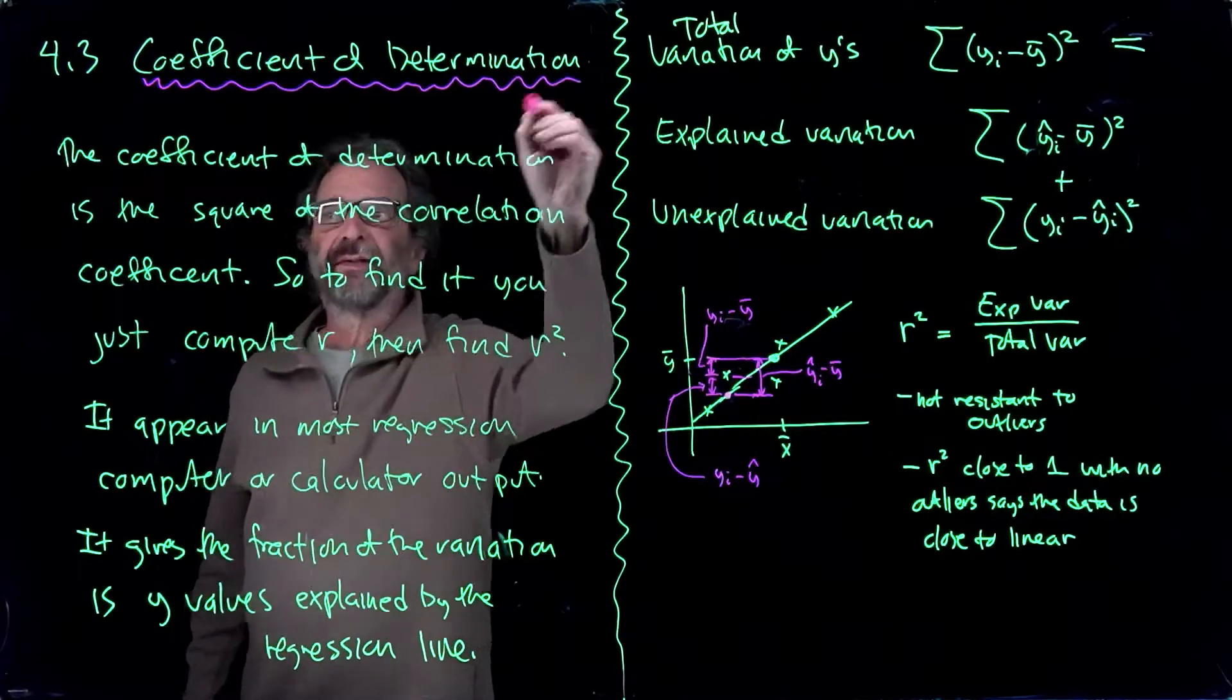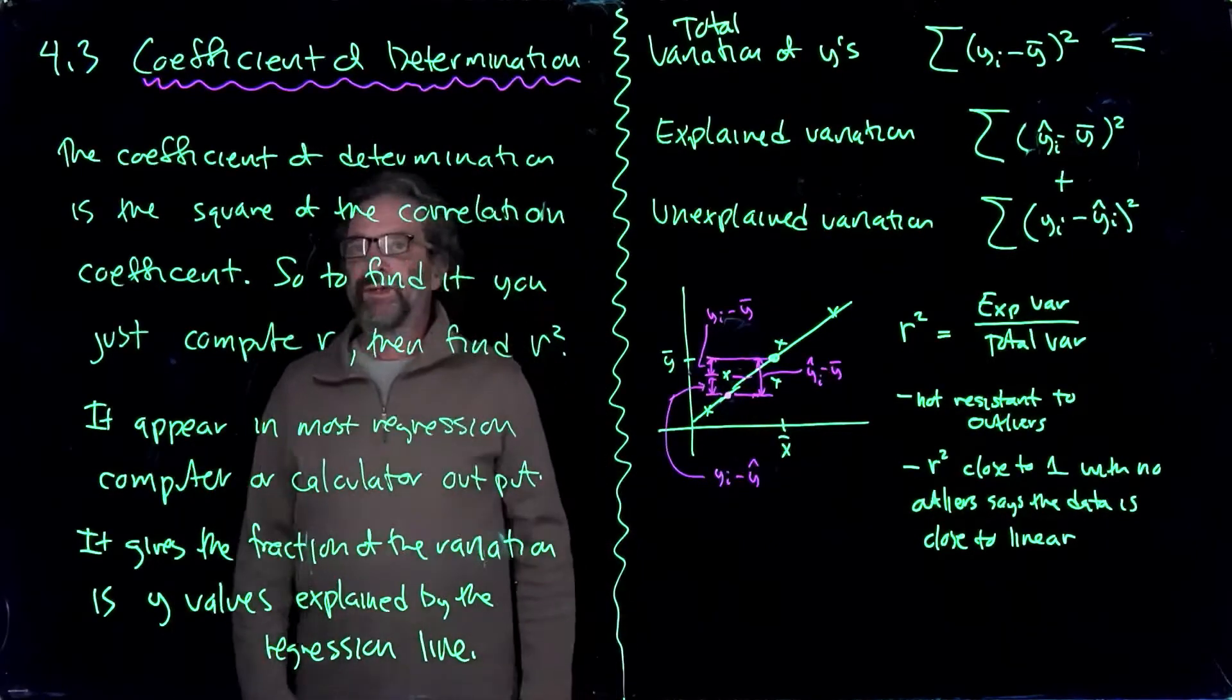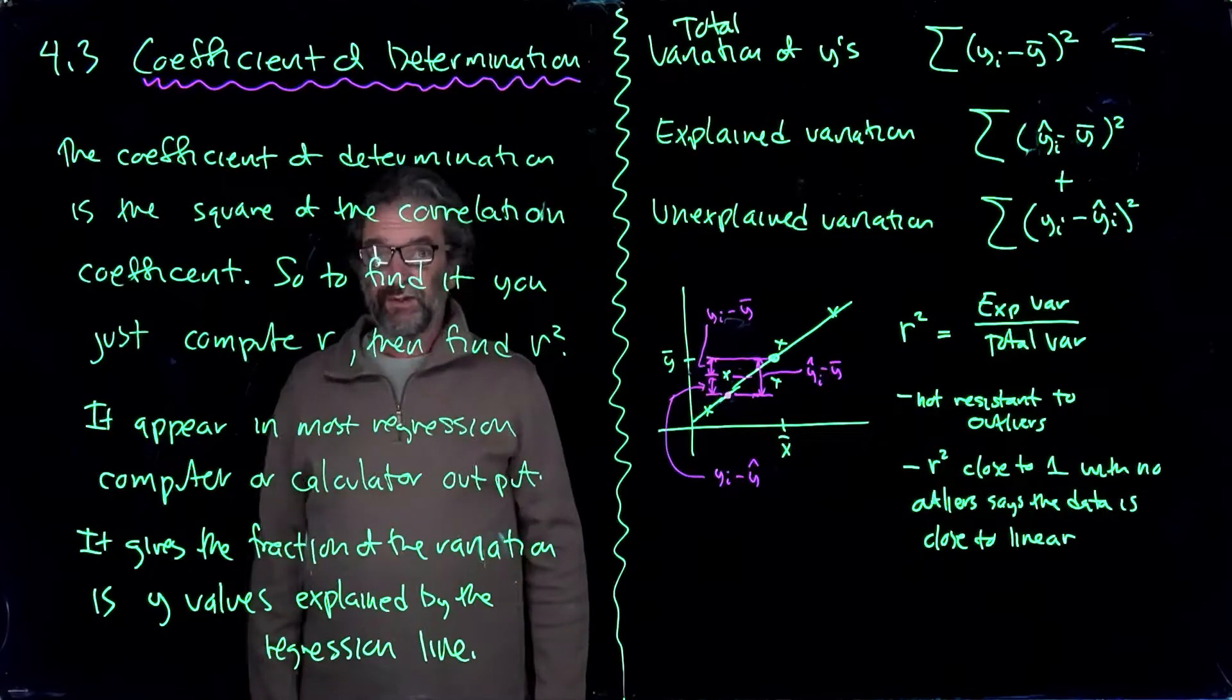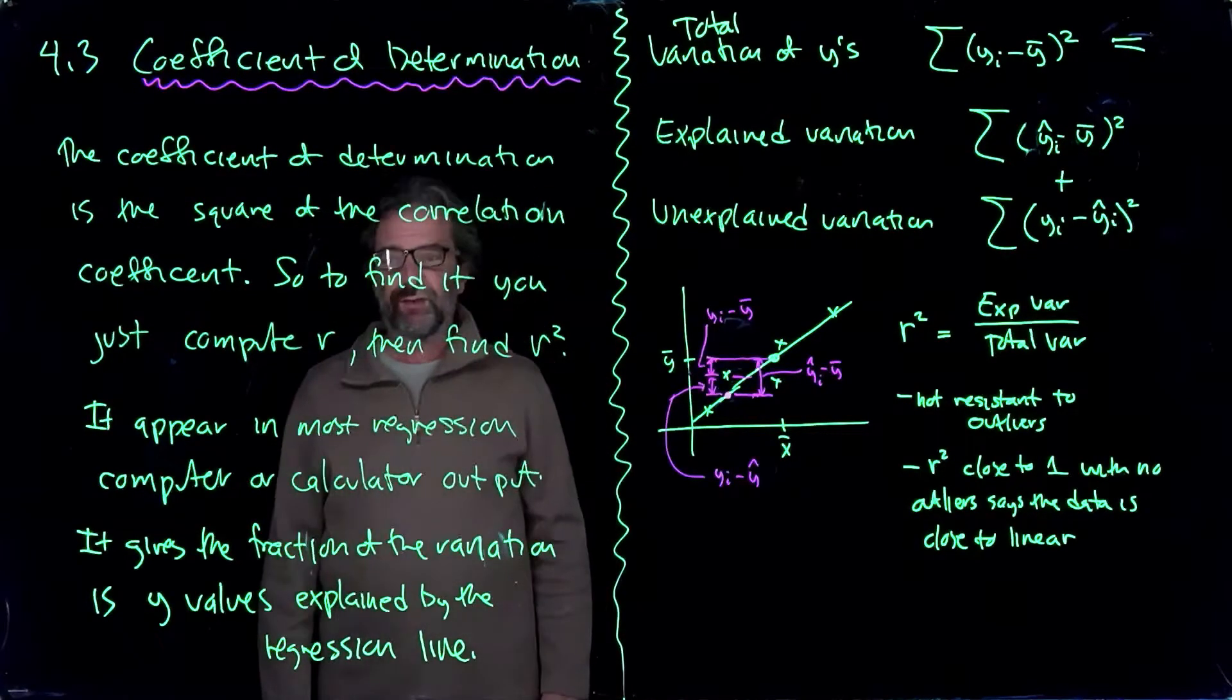It's kind of a fancy name for something easy to compute. The coefficient of determination is the square of the correlation coefficient. So to find it, you just compute r and then find r squared.